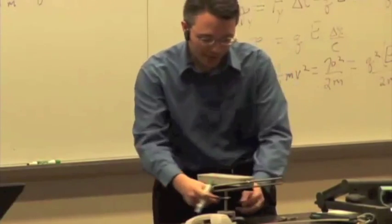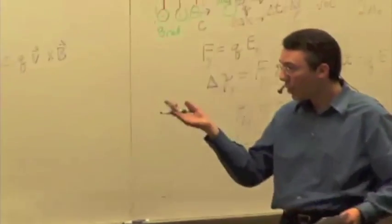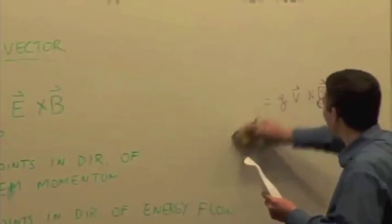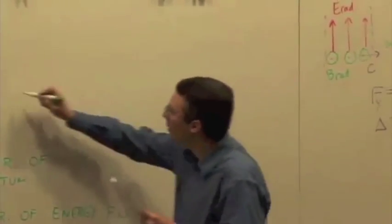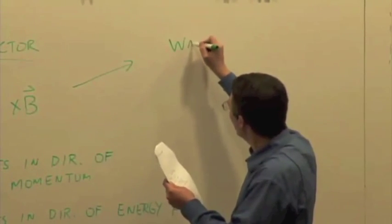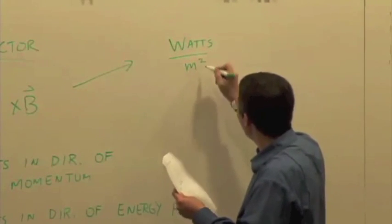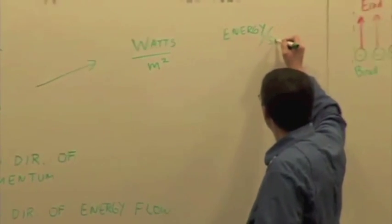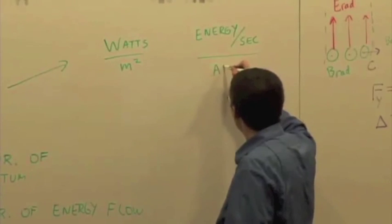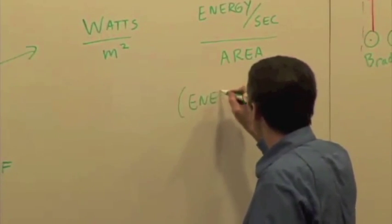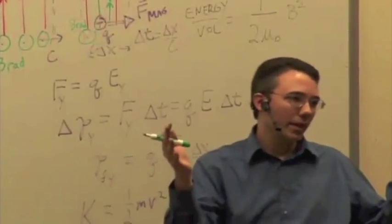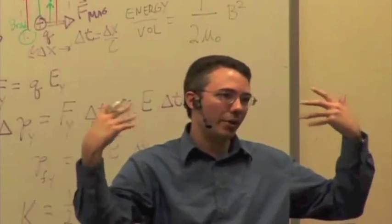So this Poynting vector gives the direction of energy flow or direction of momentum. So what is this quantity, what's the units? The units are actually watts per meter squared. So this is the energy per second per area, or a quantity called energy flux, which isn't the same as electric flux which we've talked about, but it's how much energy.